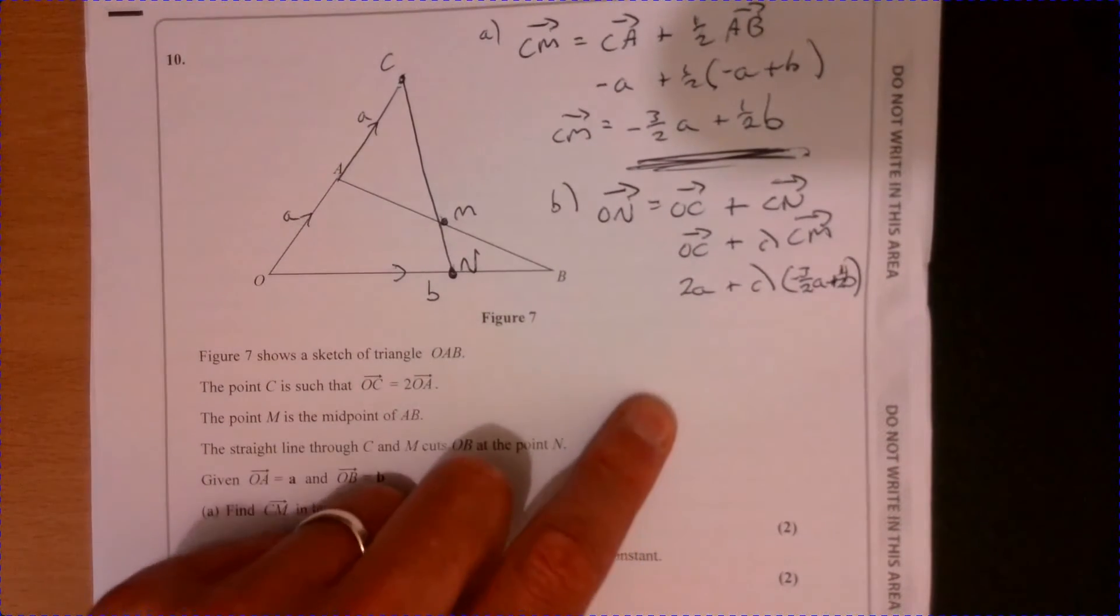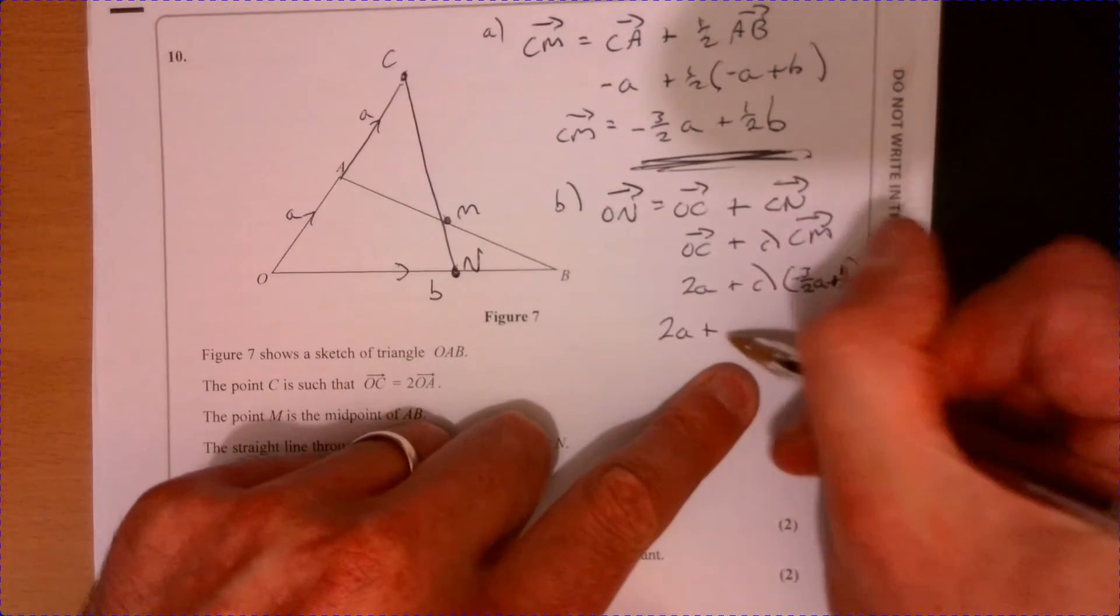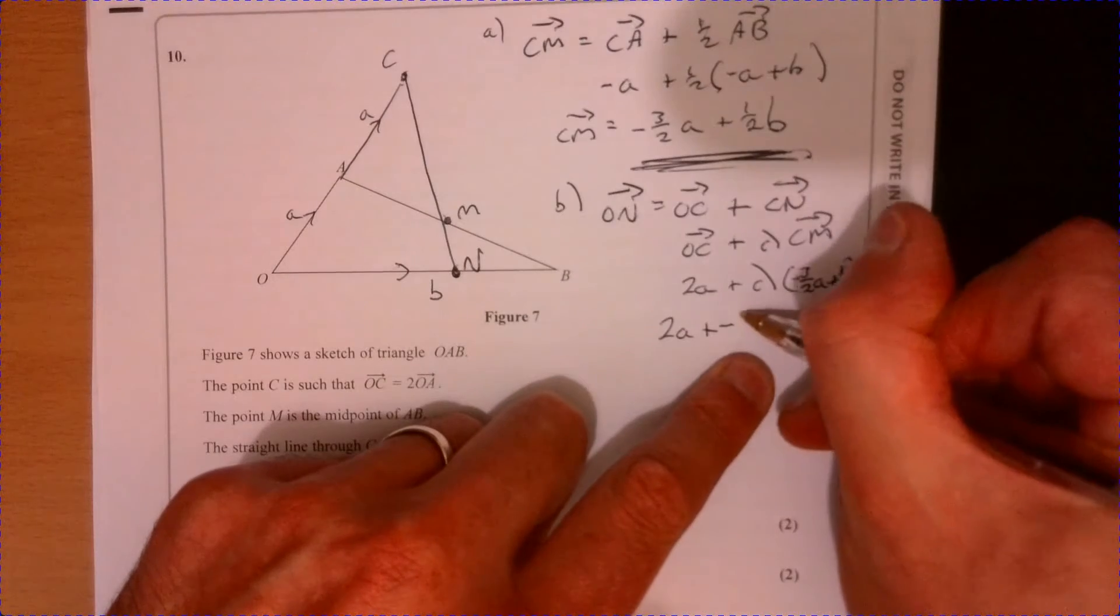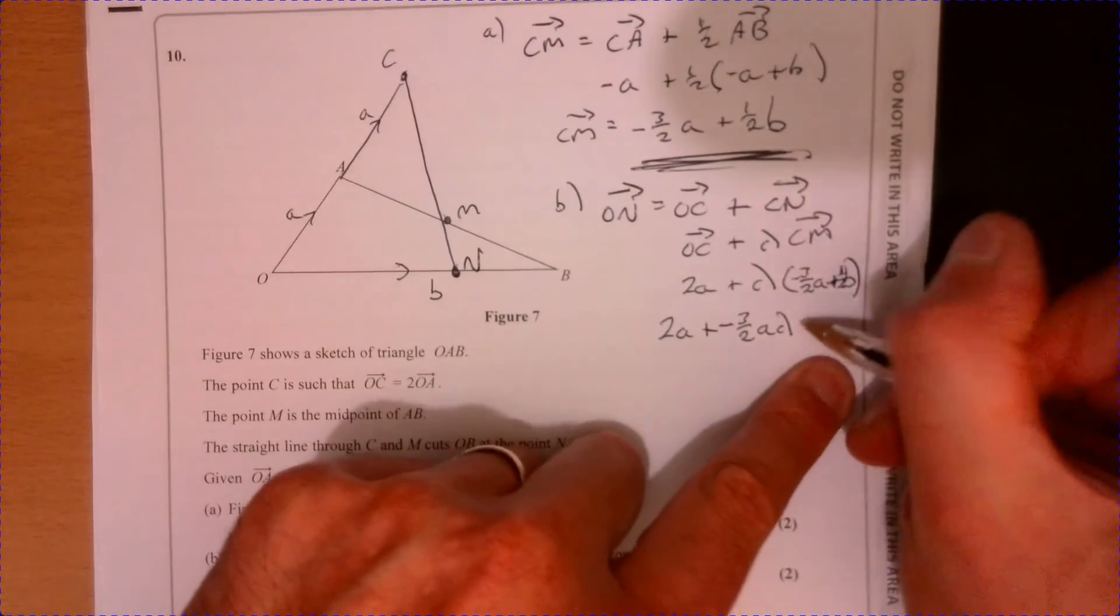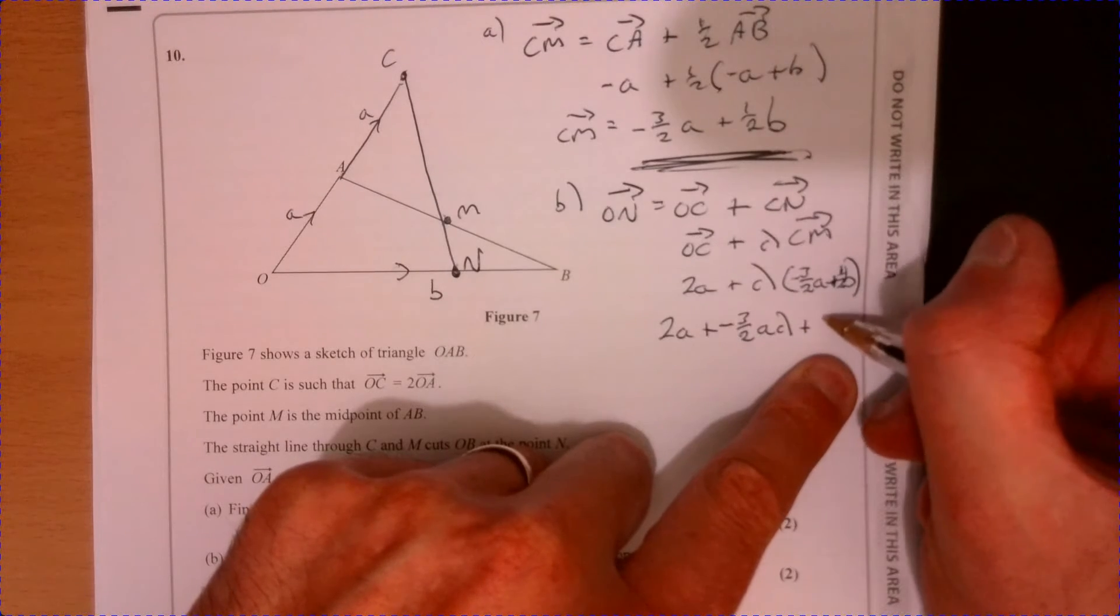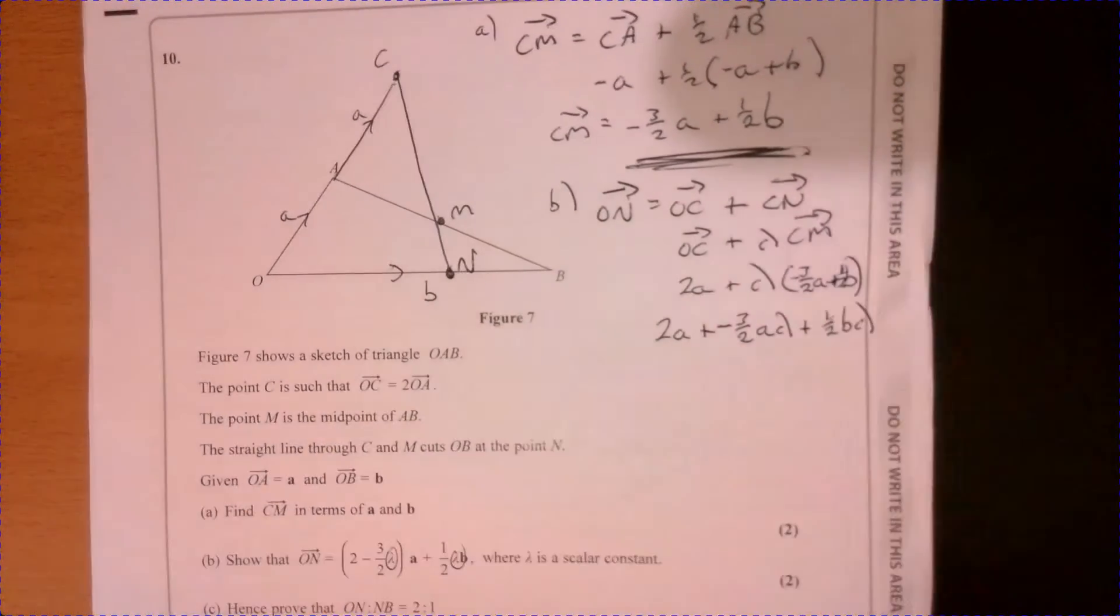So what was CM? We just worked this out up here, so minus three over two a plus the half b.